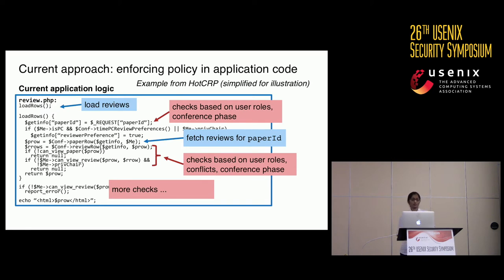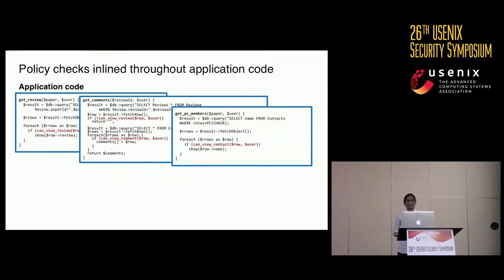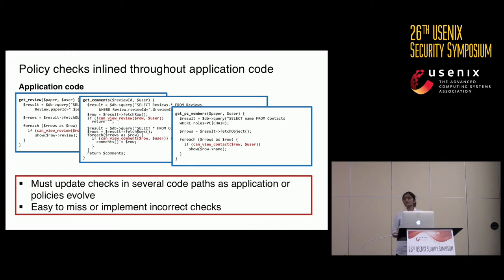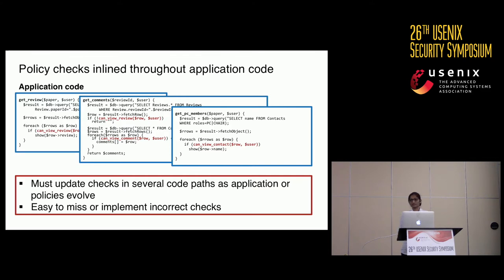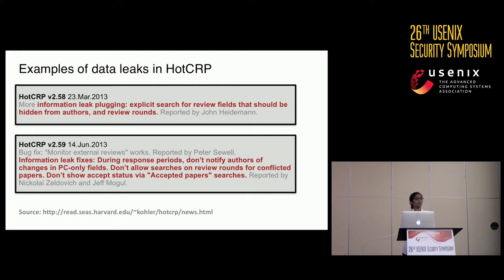There are more checks further down in the PHP code before returning the reviews to the end user. Essentially, the policy checks are mangled or inline with the application logic, and such inline checks appear throughout the code as it accesses different parts of the database based on different user requests. As applications or policies evolve, developers must continuously update the security checks, visiting many different code parts. This makes it very easy to miss policy checks or implement them incorrectly, making the compliance process cumbersome and error-prone, leading to data leaks. Indeed, data leaks have been reported in HotCrp in the past due to such policy compliance violations.